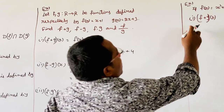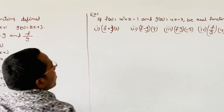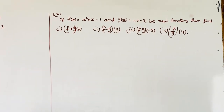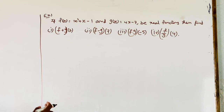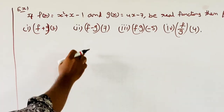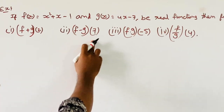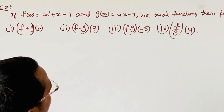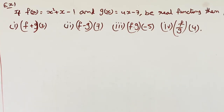Next, let us see another example. If F of X equals X squared plus X minus 1 and G of X equals 4X minus 7, these are real functions. Find F plus G of 2, F minus G of 7, F into G of minus 5, and F by G of 4.